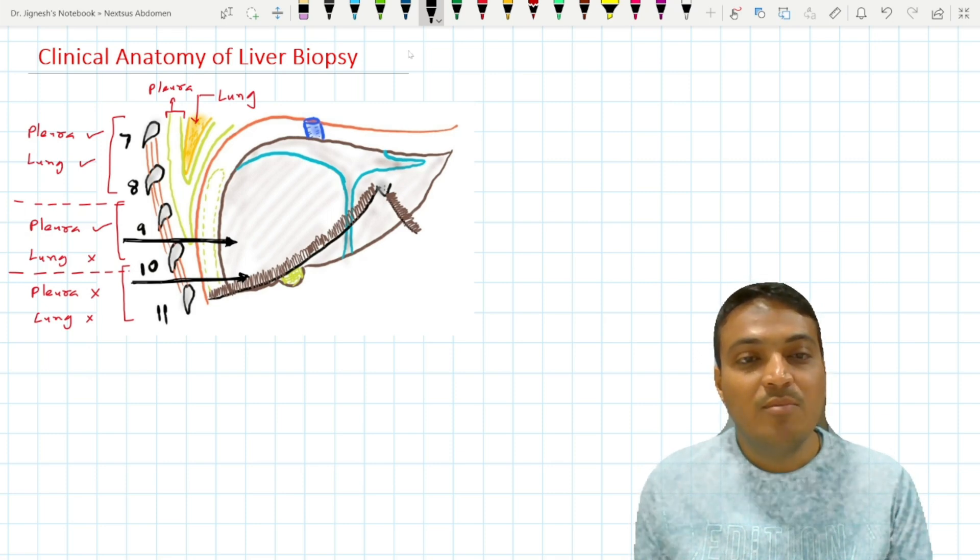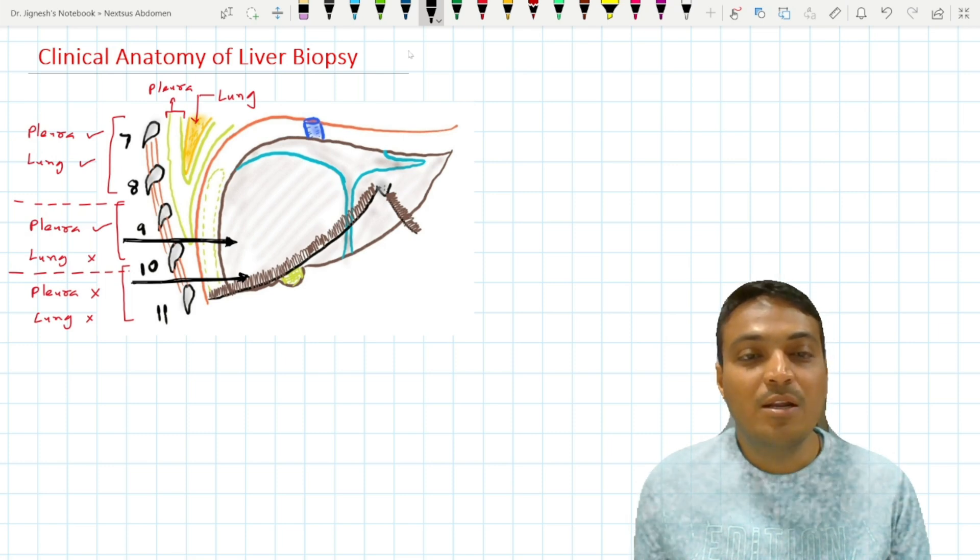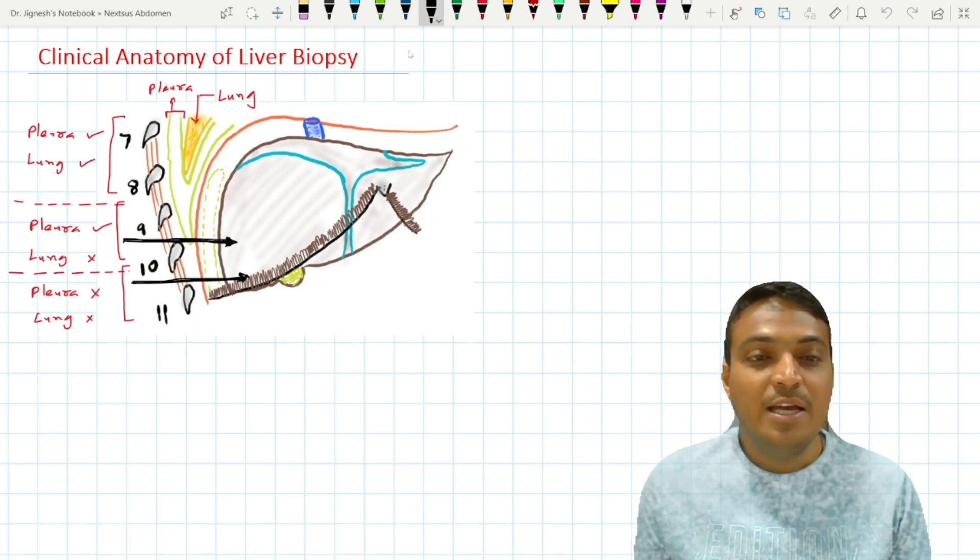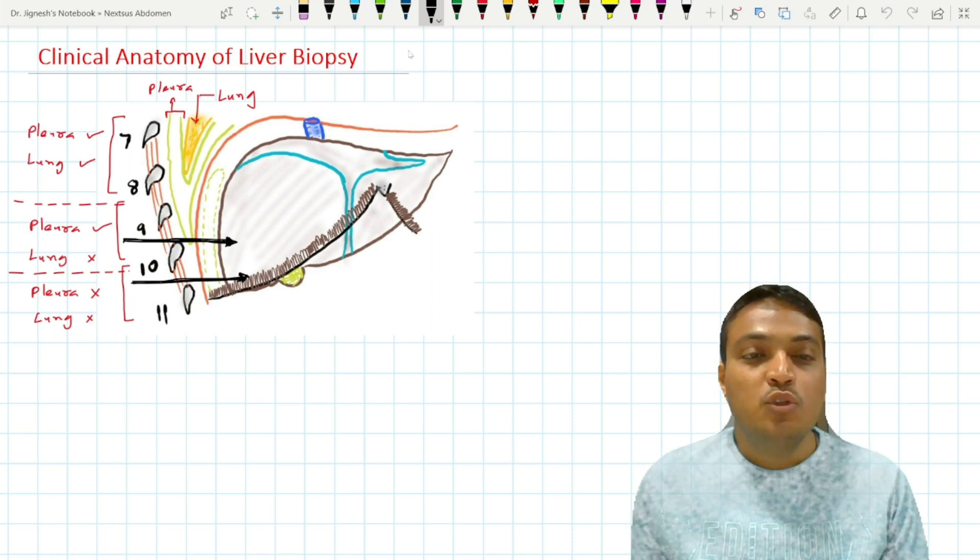Then we pierce the diaphragm muscle. After piercing the diaphragm muscle, we have to pierce the parietal peritoneum. And then we need to reach up to the subdiaphragmatic recess. And then we pierce the visceral layer of the peritoneum to reach up to the liver. So this many structures can be pierced through this liver biopsy at the 9th or the 10th intercostal space.